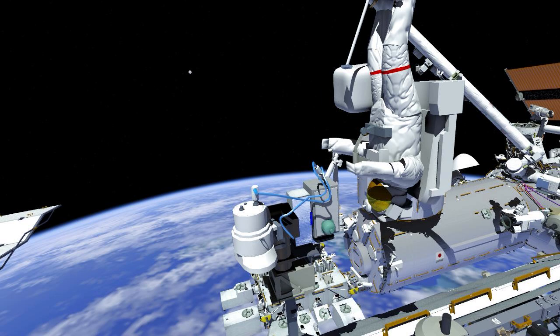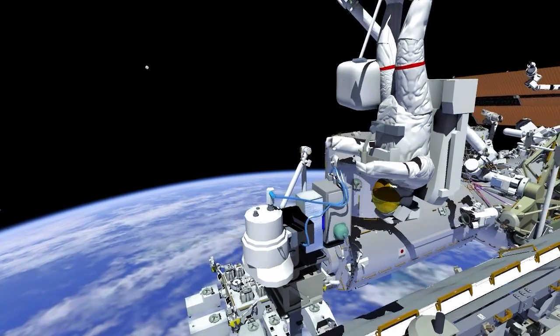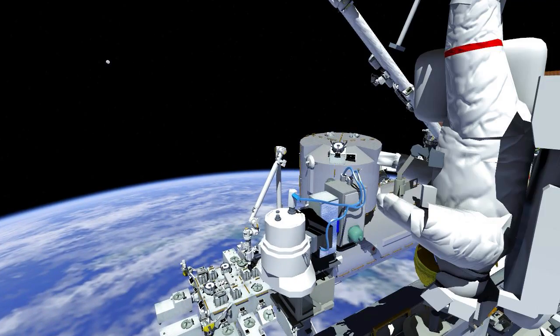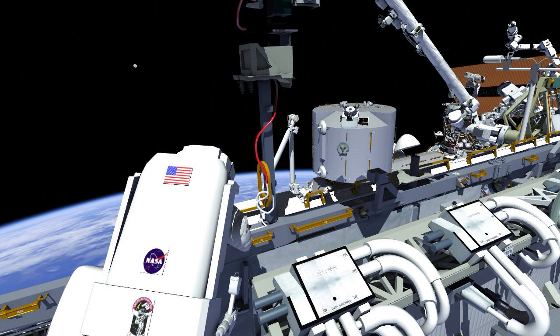To ensure the new wireless access port cable does not interfere with the new camera group's ability to pan and tilt, the crew installs a strap to hold the cable in place. EV2 mates the wireless cable to the ethernet cable routed earlier in the EVA.